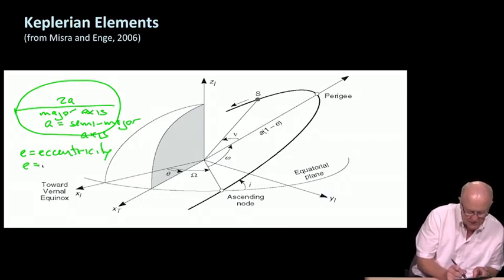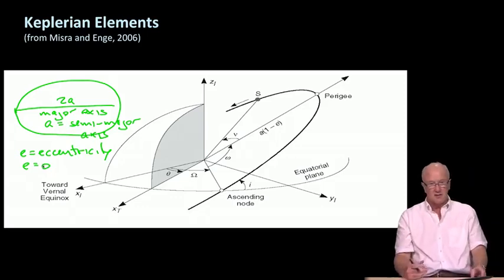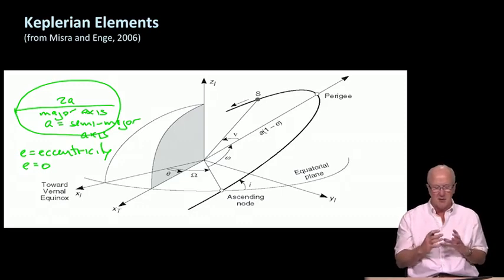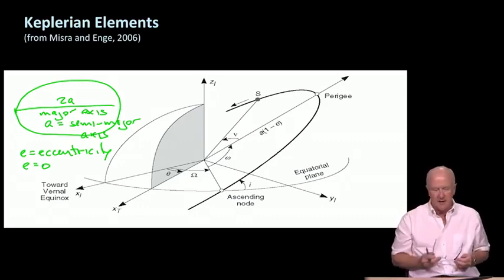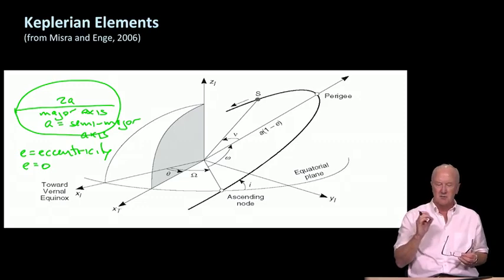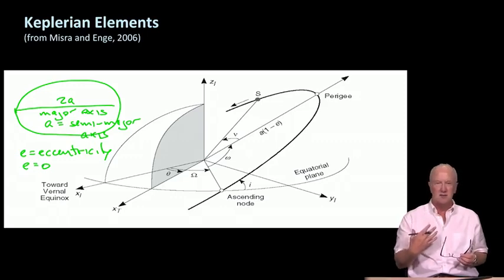The next Keplerian parameter is E, the eccentricity. Now, if E is equal to zero, which means that it's not eccentric, what we're saying there is that the orbit is circular, a perfect circle. We don't have to invoke an ellipse to describe it. The GPS orbits are very close to circular. However, they're not perfect circles. And because we're trying to achieve one meter accuracy, half meter accuracy, we do have to go with the more sophisticated description that allows for these ellipses to be just that, ellipses as opposed to perfect circles.